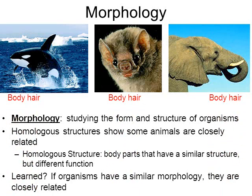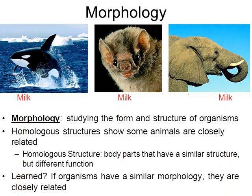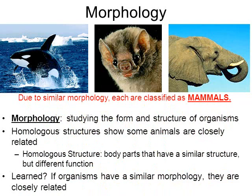Their morphology shows that all three — whales, bats, and elephants — have body hair. All three give live birth to young; they don't lay eggs. All three are warm-blooded, meaning they're able to produce and maintain their own body temperature. And all three species produce milk — the females produce milk to feed their young. Due to this similar morphology, all of them are classified as mammals.